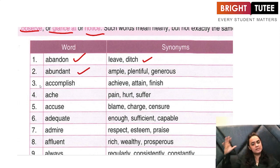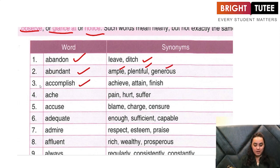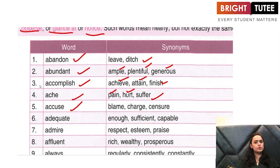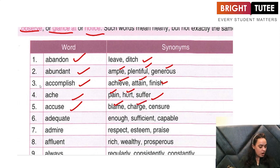'Abundant' — something which is there in ample quantities, plentiful, or generous amount. 'Accomplish' — to achieve something, to attain something, to finish something. 'Ache' — the body ache, the pain, hurt; when you suffer from something, that is ache. 'Accused' — when you blame somebody for something, that is accusing. Charge or censure are the synonyms that mean the same as accuse.